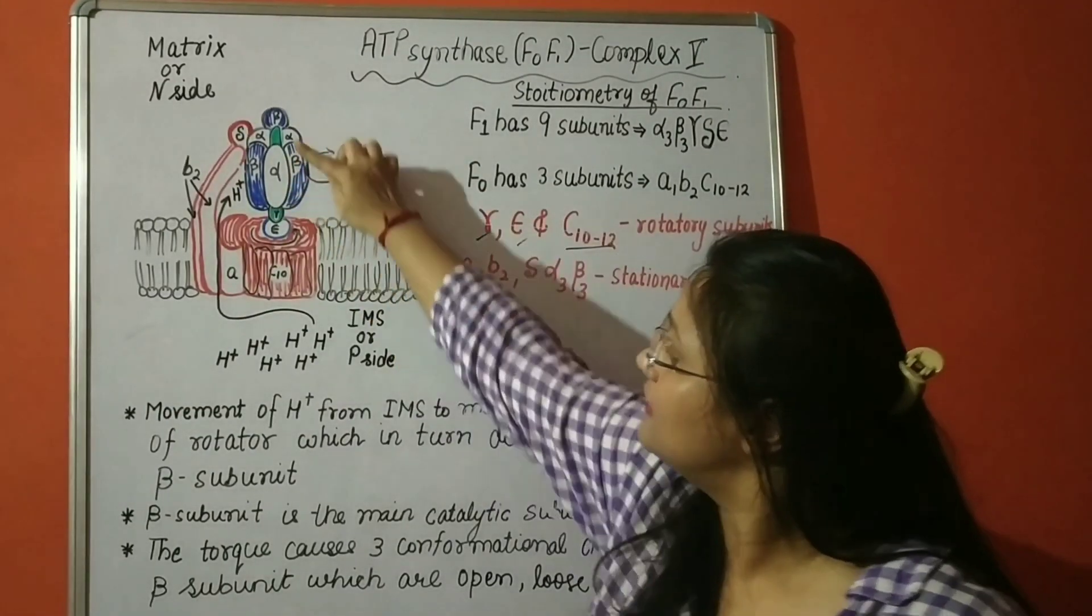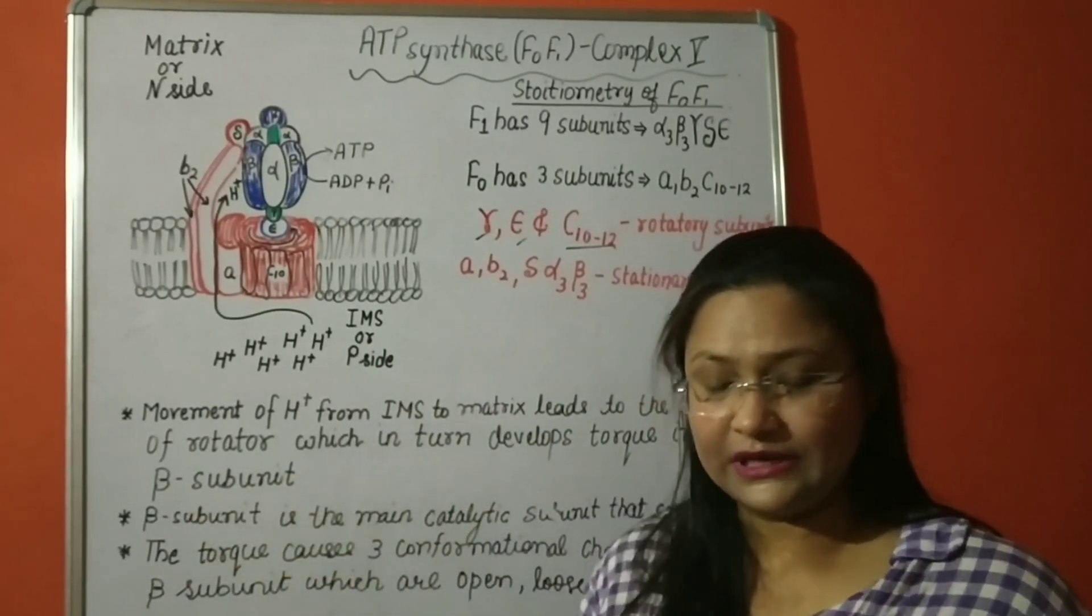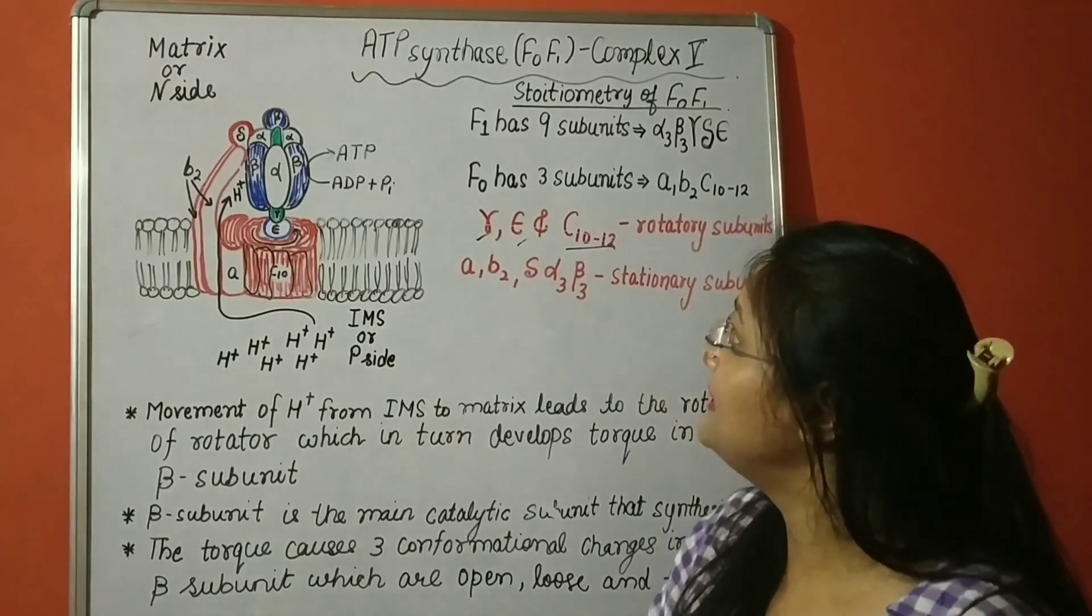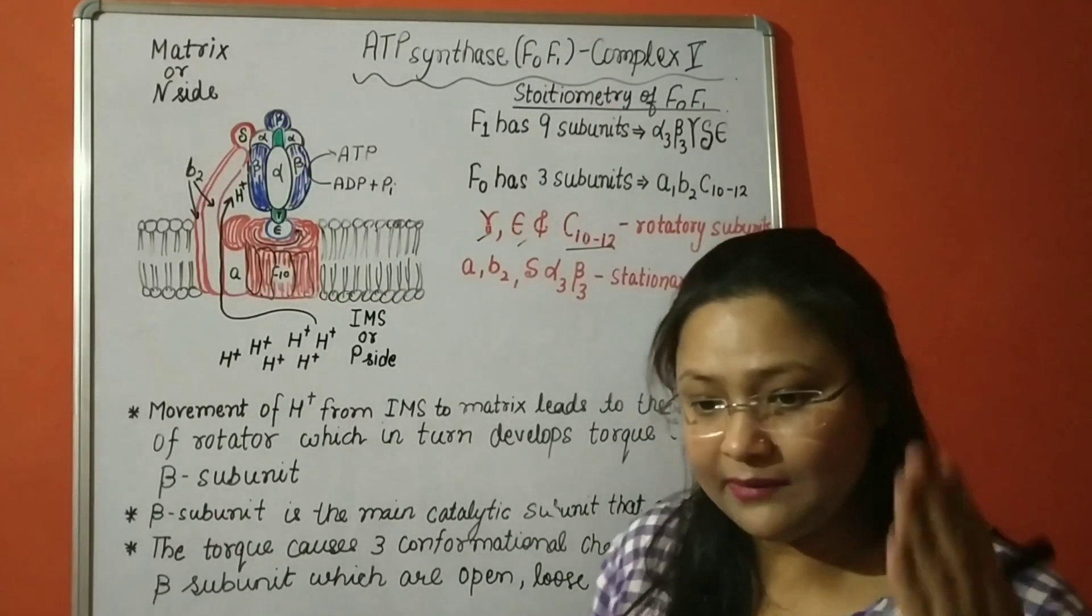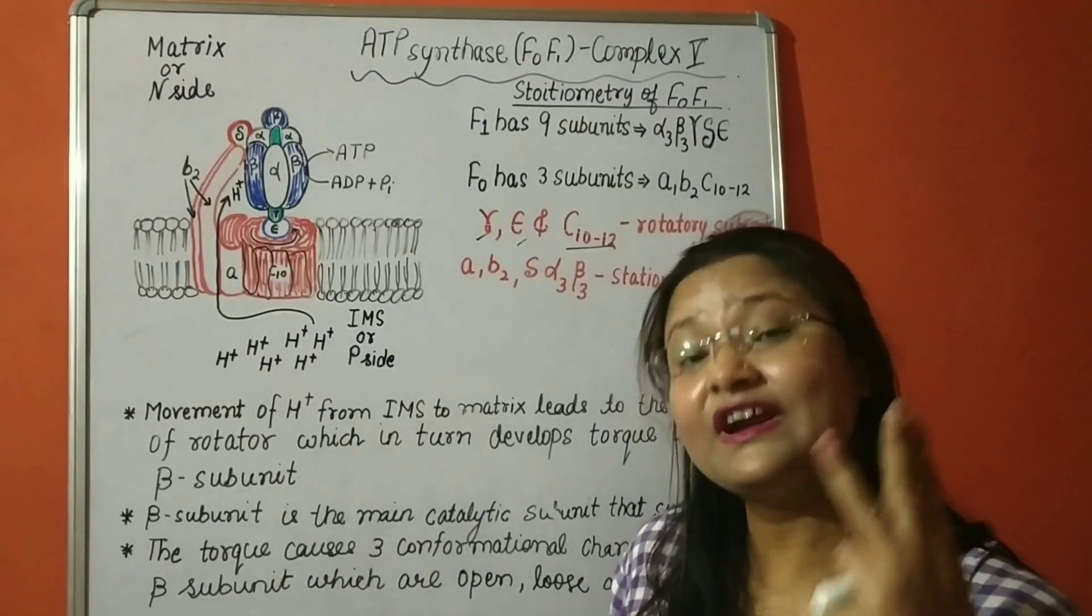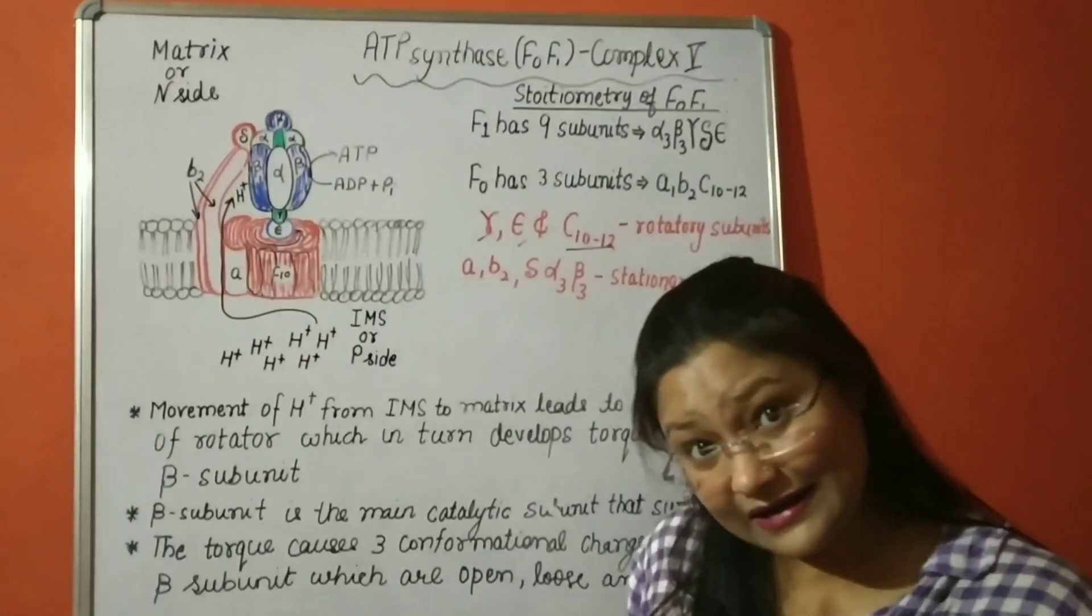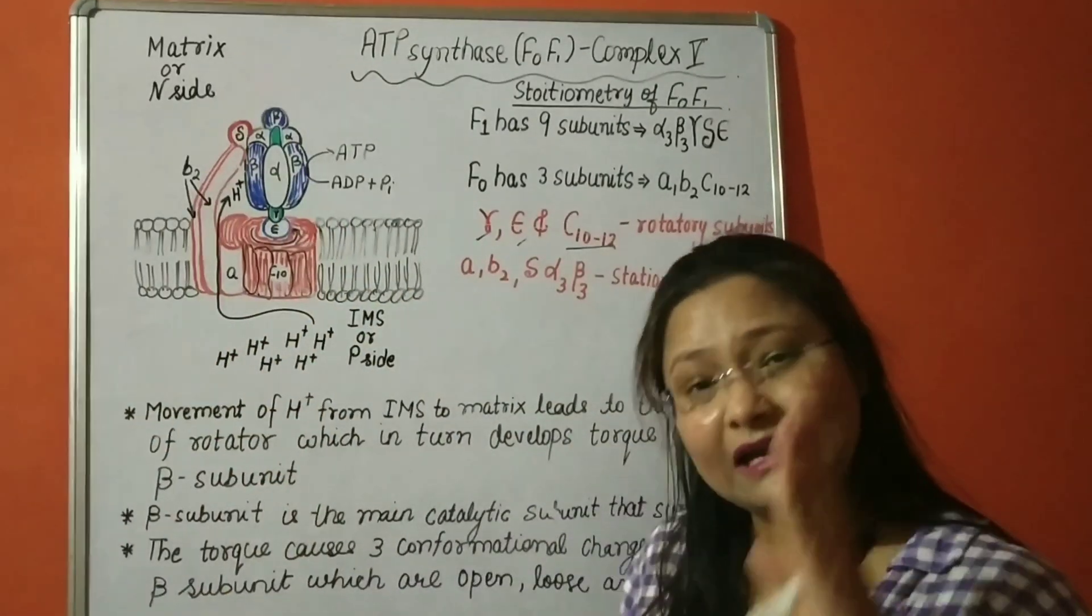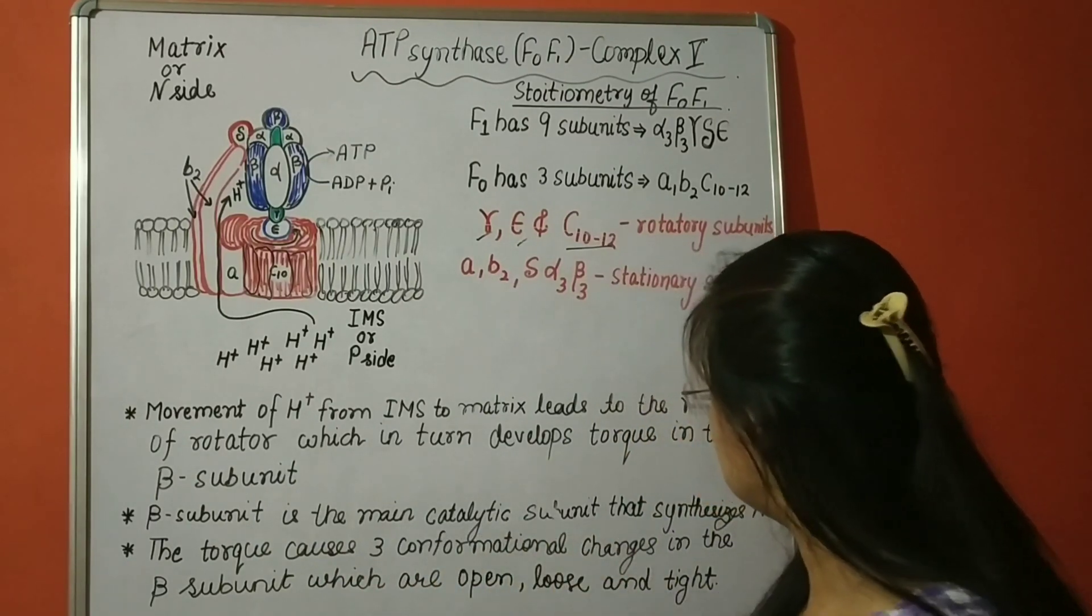When this gamma subunit, the one in green color, will rotate, then a torque will be generated in the beta subunit. Here it is pertinent to mention that beta subunit has three parts. One, two, three. And all of them are identical, exactly the same. The polypeptide chain is exactly the same. But because of the rotation of gamma, three different kinds of conformations are produced in beta subunit. So beta subunits are identical, however, because of the torque generated by gamma subunit, it can be converted into three conformations.